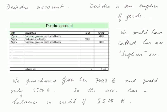Then, Deirdre's account. Deirdre is our supplier of goods — one of our suppliers. We could have called it the supplier's account, although there are some other suppliers, so we called it Deirdre's account. We purchased from her altogether, on credit, 7,000 euros. And we paid partially, after the first purchase, 1,500 euros. So the account altogether has a balance in credit of 5,500 euros — that's what we still owe to Deirdre at the end of the accounting period.